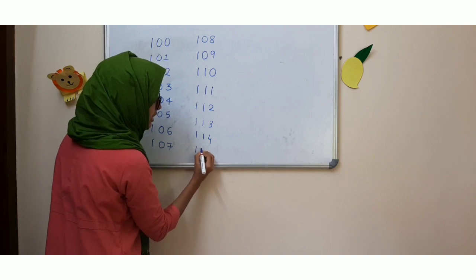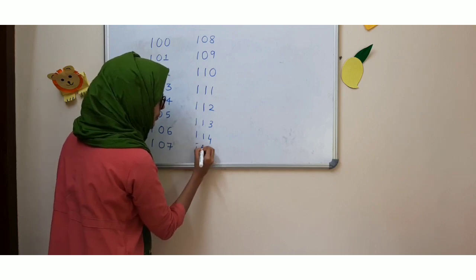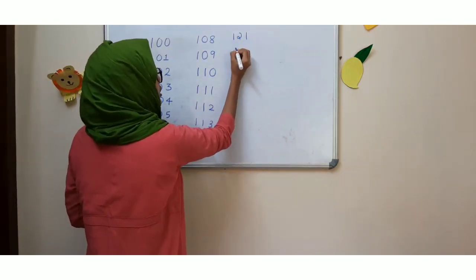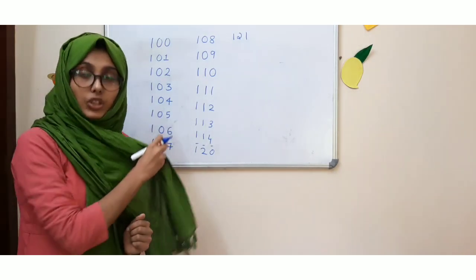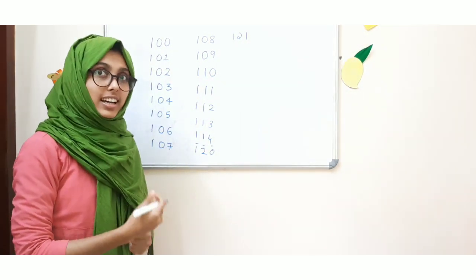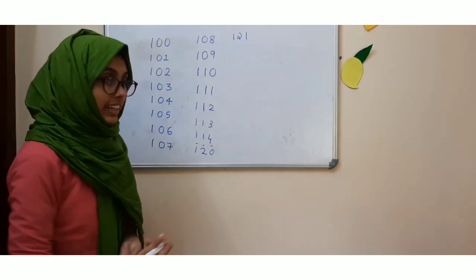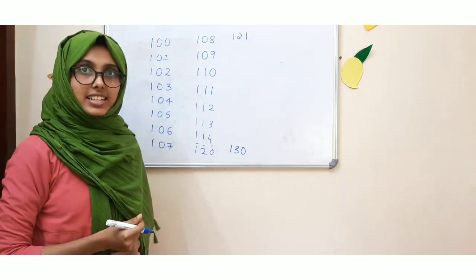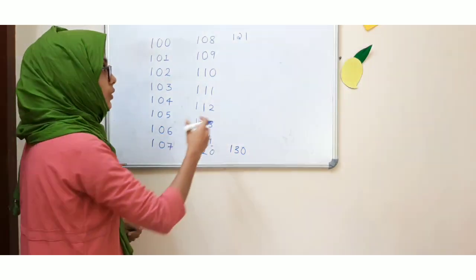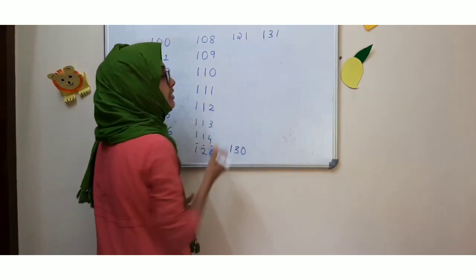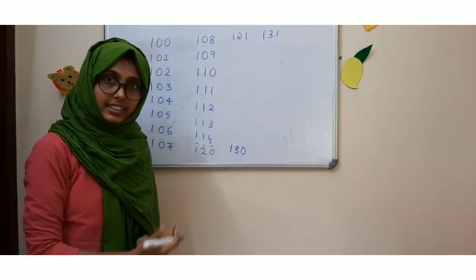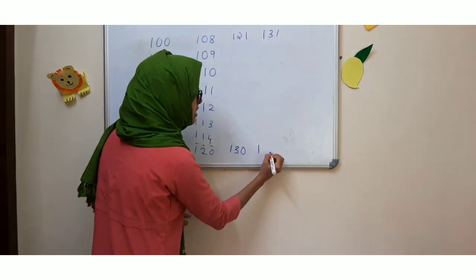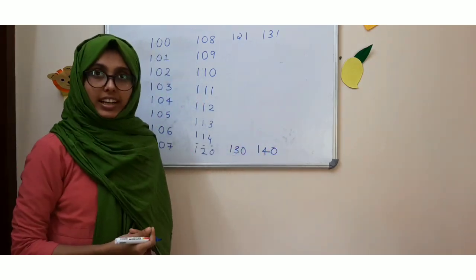Then we will go to 100 and 20. Then again 100 and 21, 122, 123, 124, 125, 126, 127, 128. Then it will become 100 and 30. So again 131, 132, 133, 134. Then it will become 100 and 40.